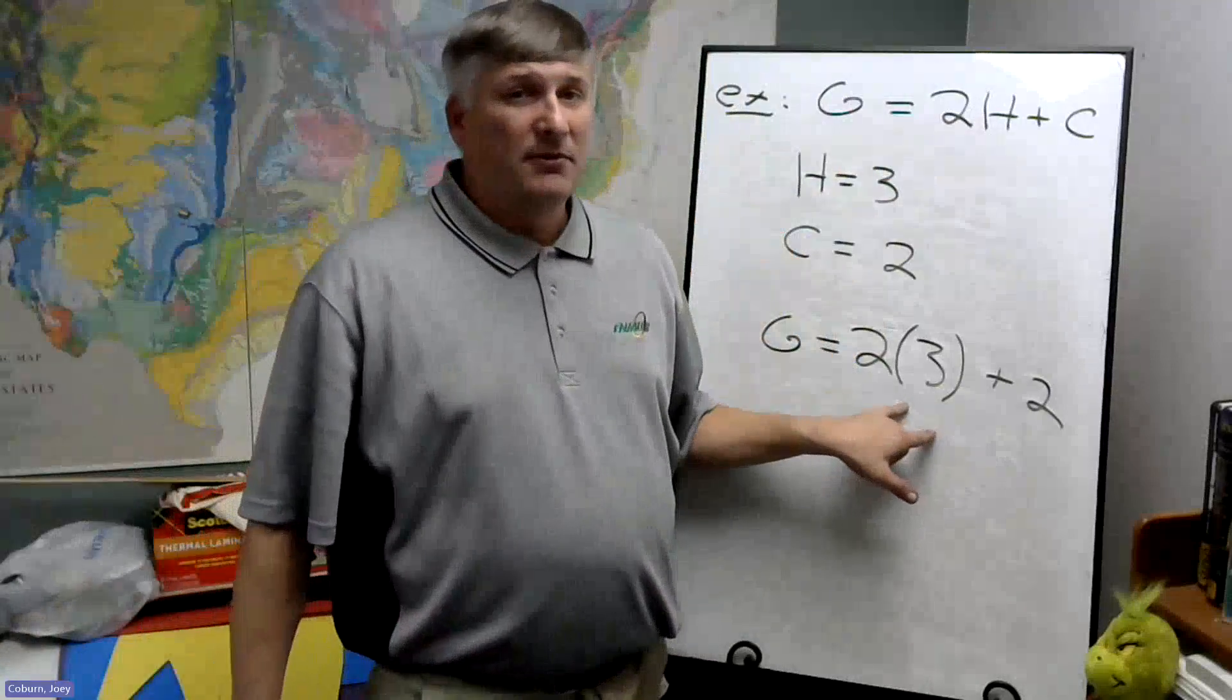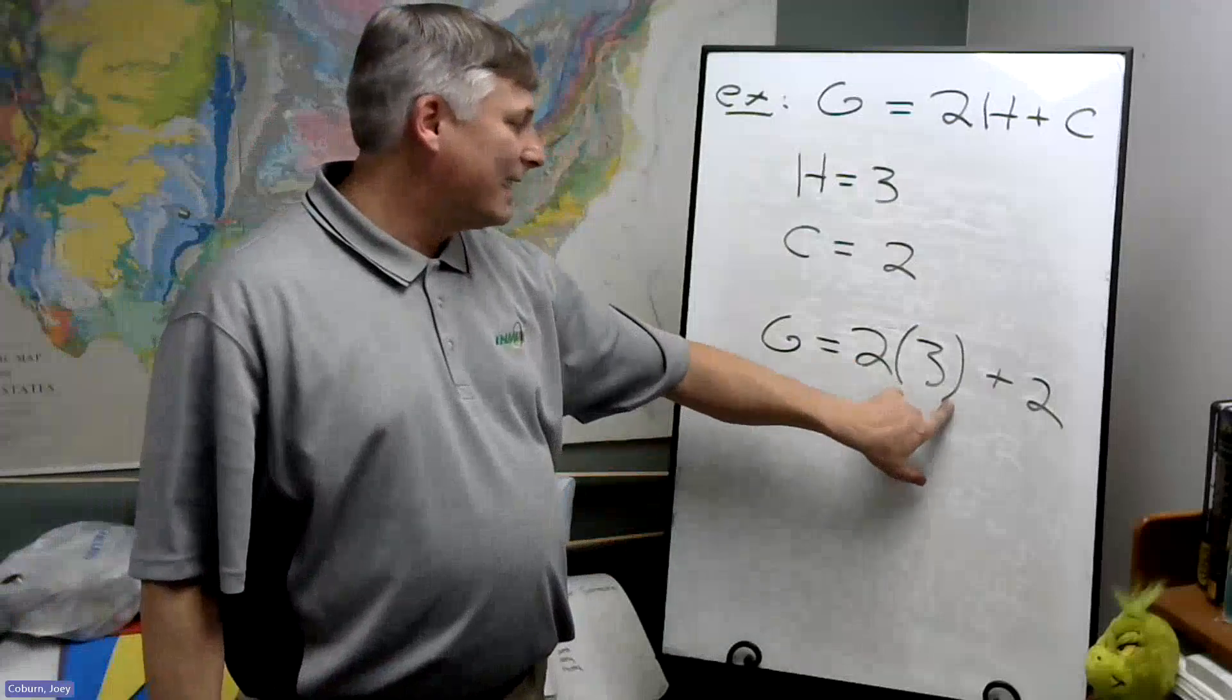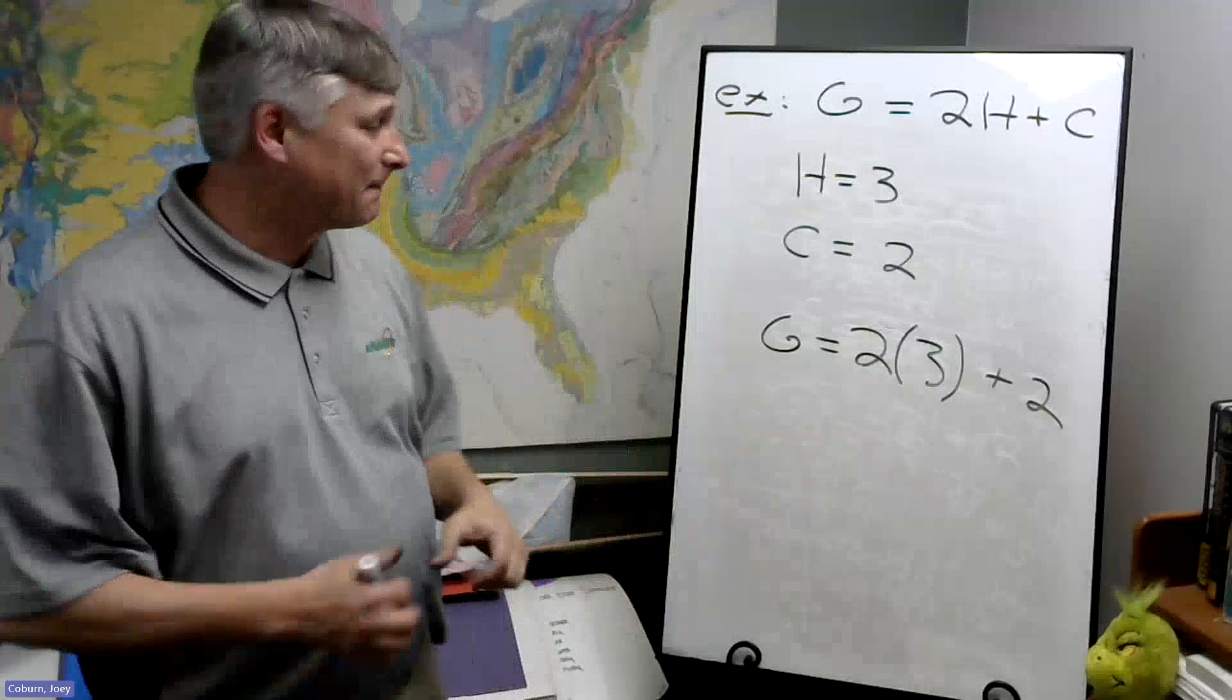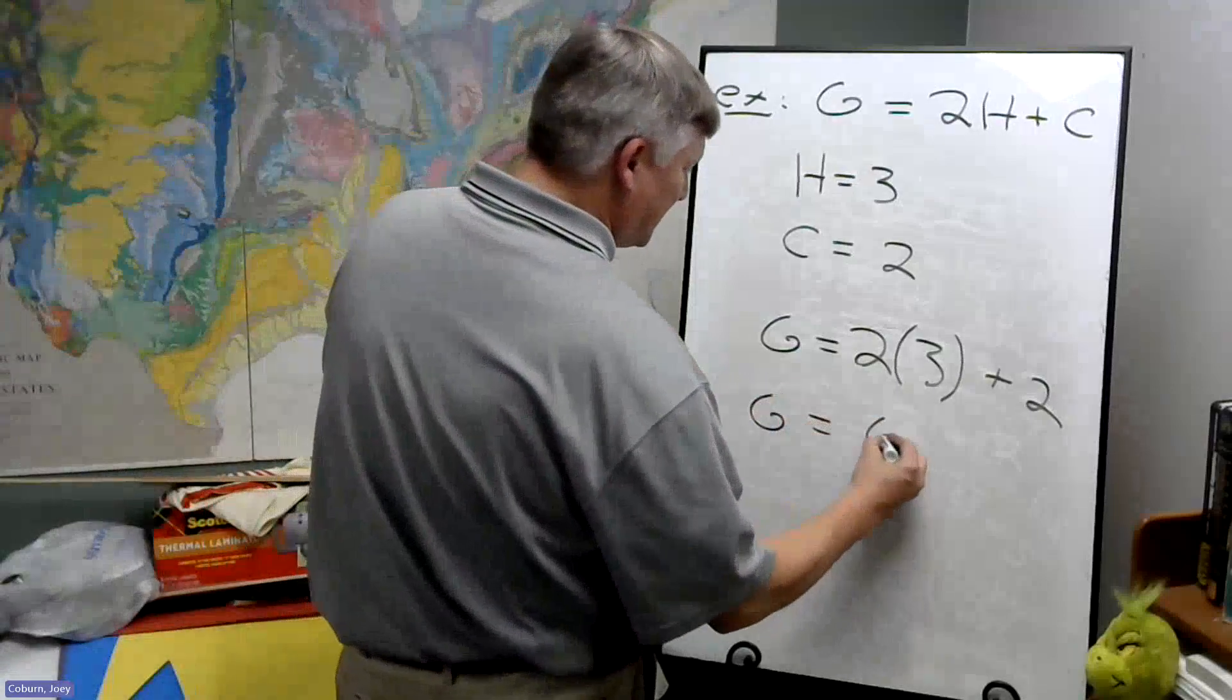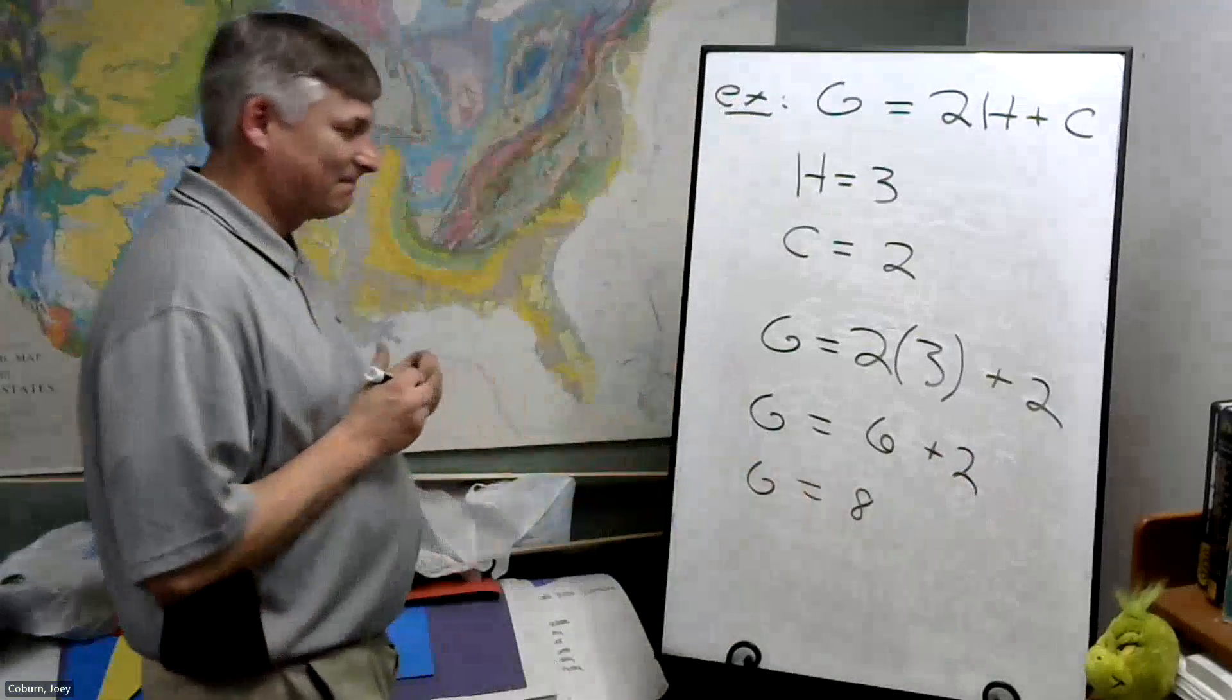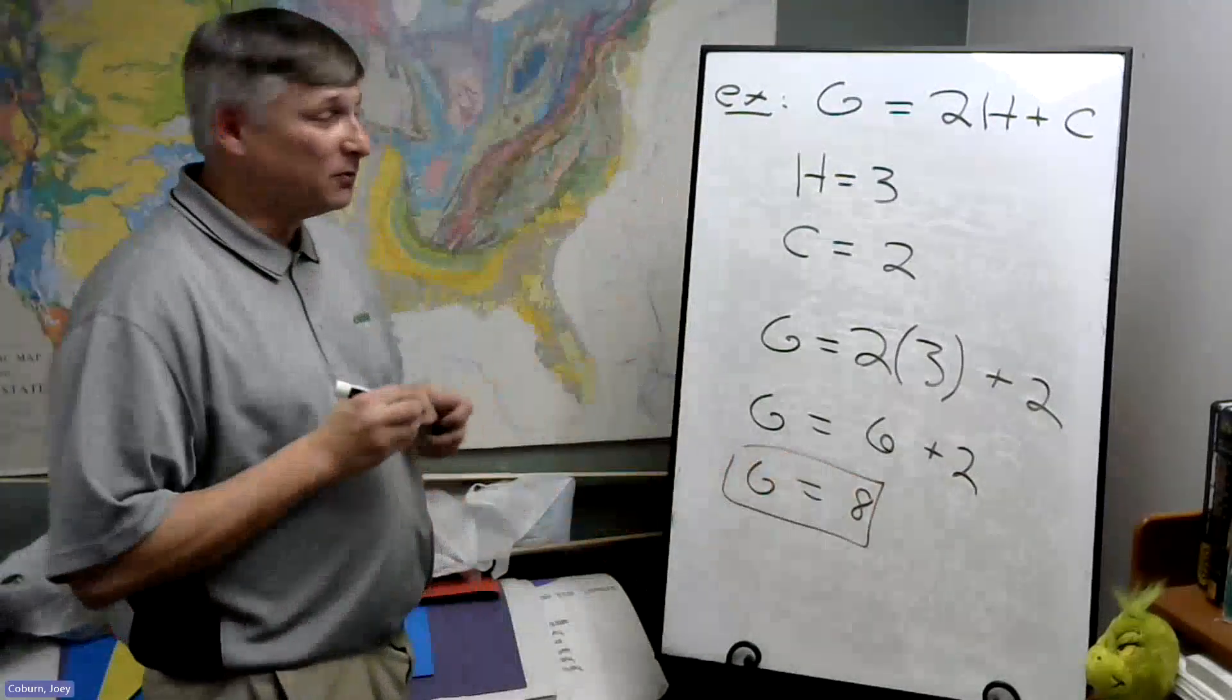This is another use of double parentheses. Double parentheses mean 2 times 3. You'll run into this quite a bit and we go about the exact same way. This is 6 plus 2 or 8. Same answer as before.